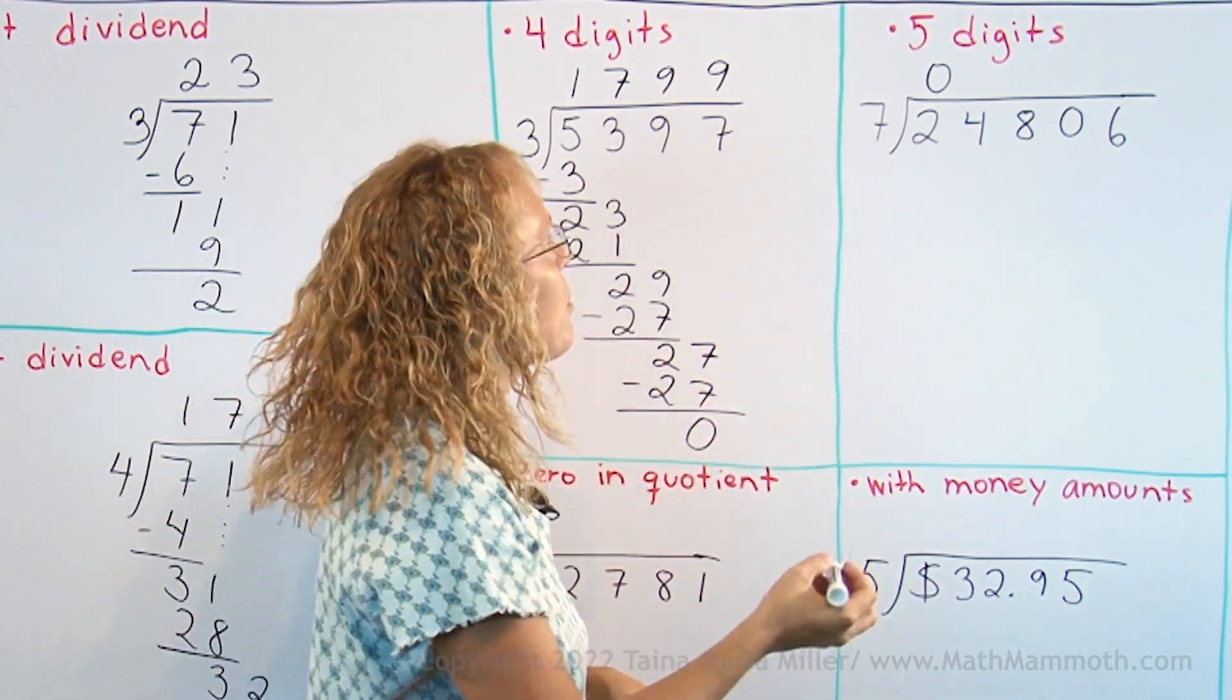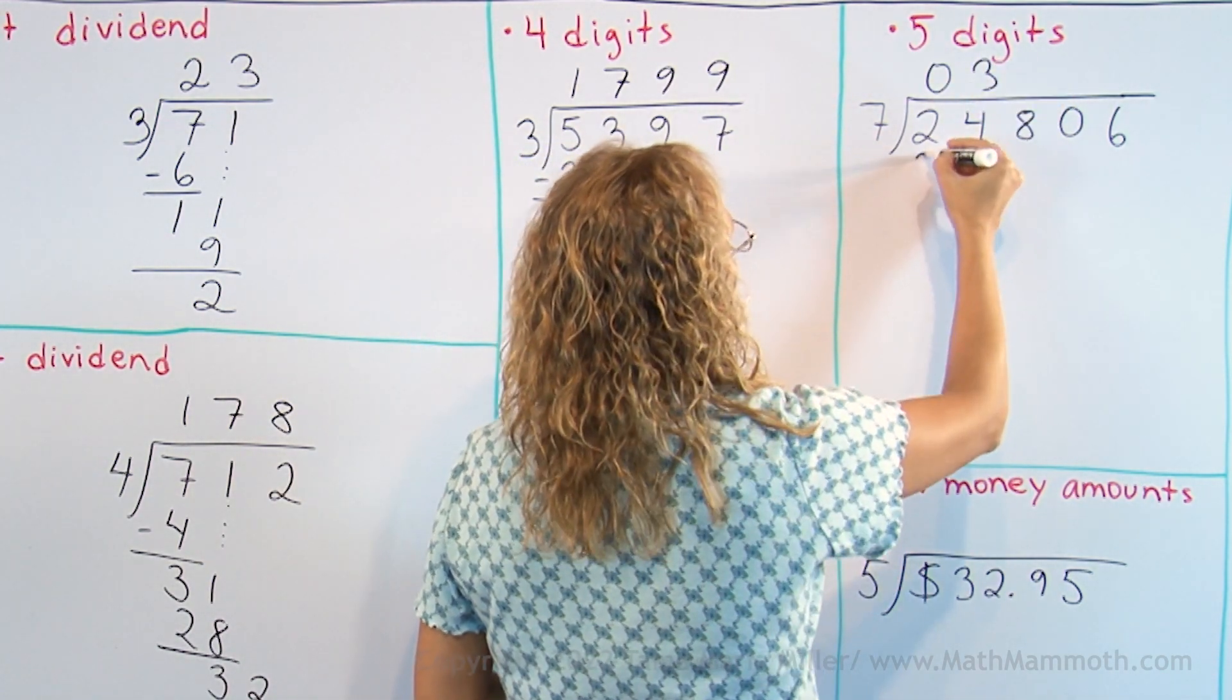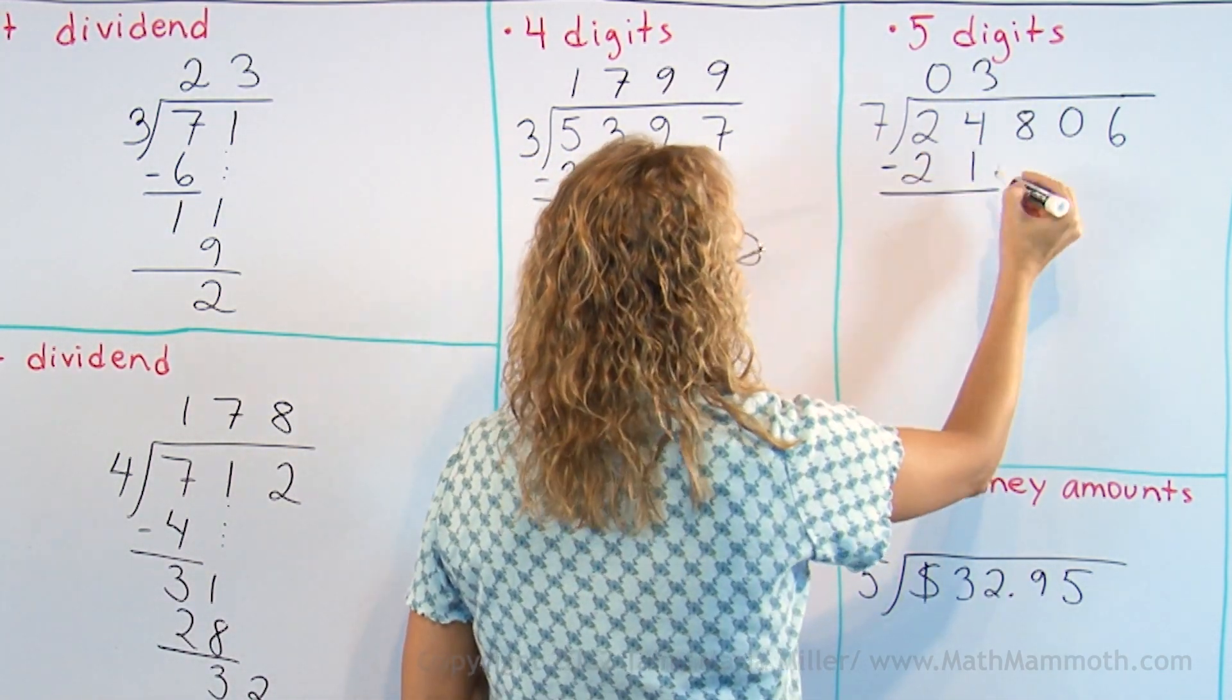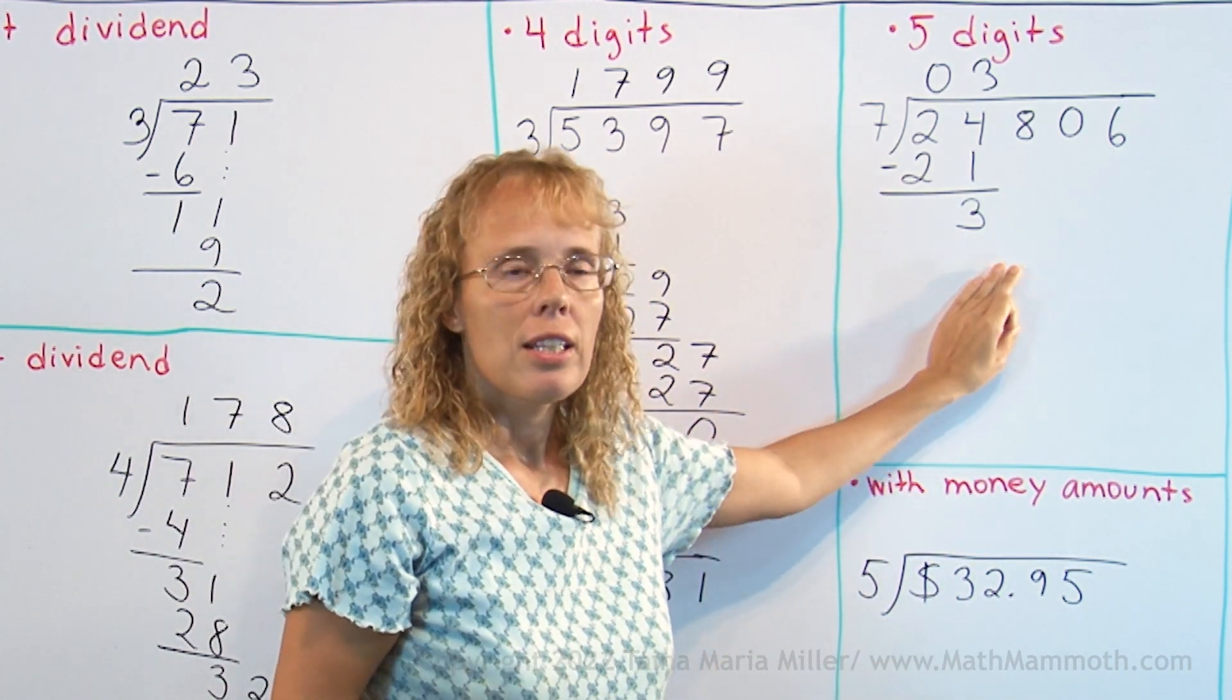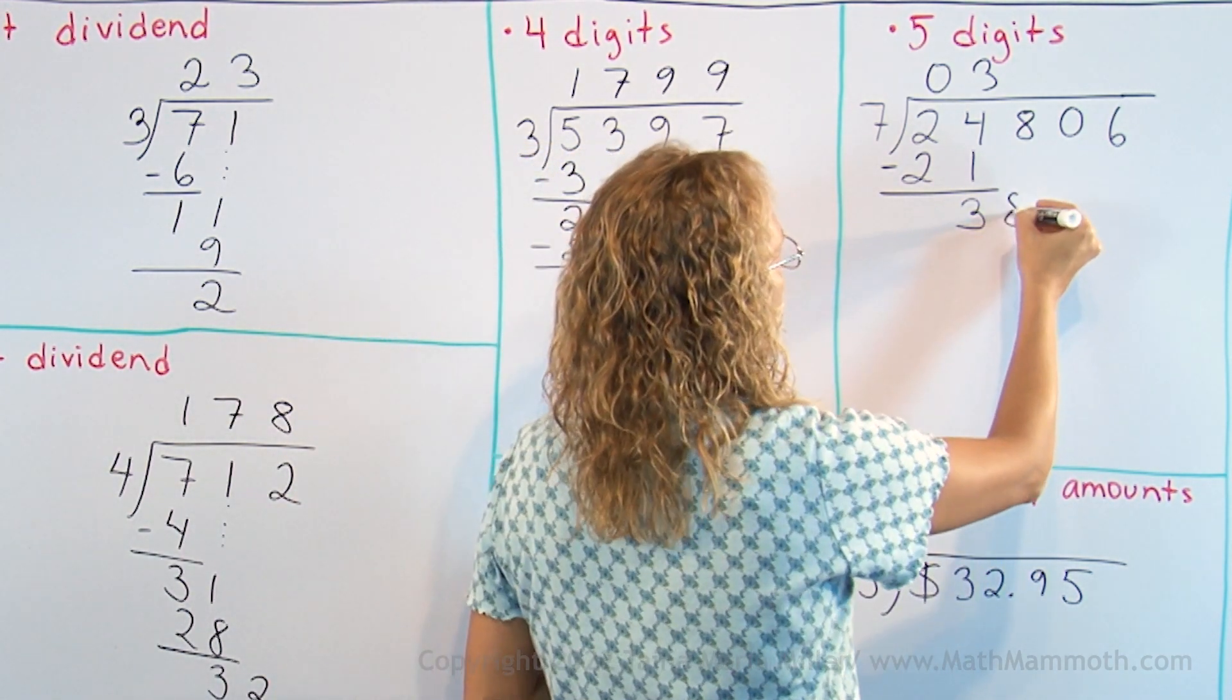7 goes to 24, 3 times. 3 times 7, 21, and subtract. Here's a remainder of 3, it's three thousands, then we add to it the eight hundreds or drop down this digit.